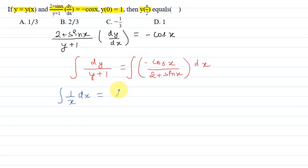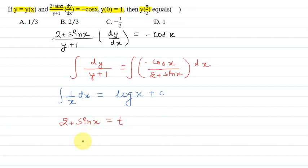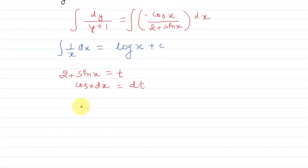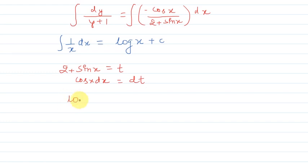यह log x + c का format use करते हैं। Right hand side के integral के लिए, denominator 2 + sin x को t रखते हैं, differentiation करने पर cos x dx = dt हो जाता है। तो ऊपर cos x dx, dt में चला जाएगा और नीचे 2 + sin x की जगह t हो जाएगा।